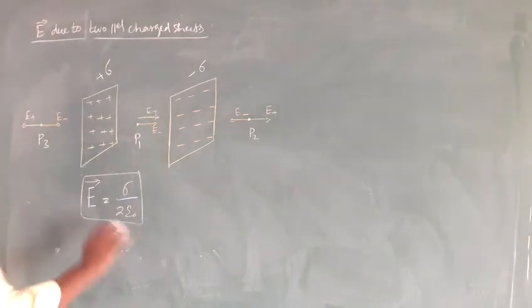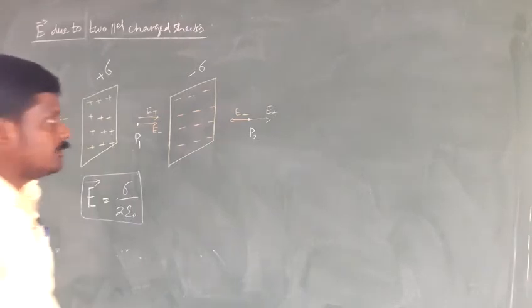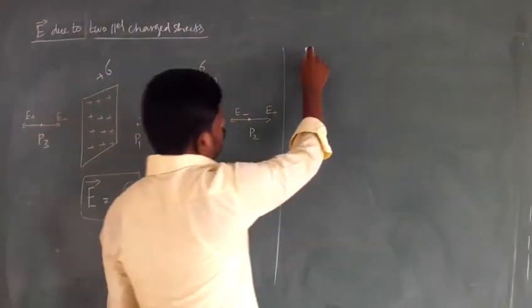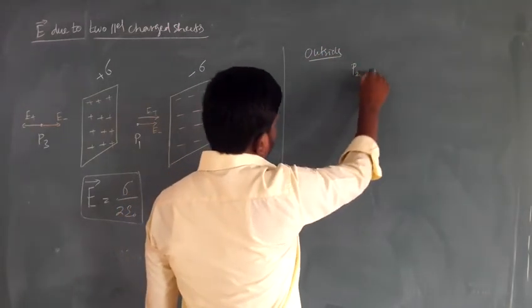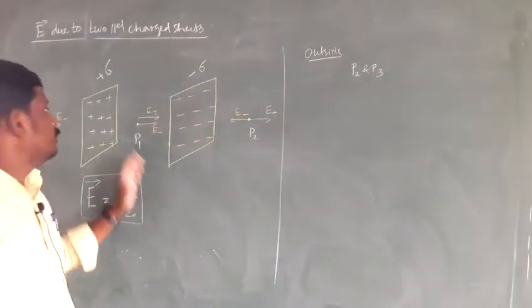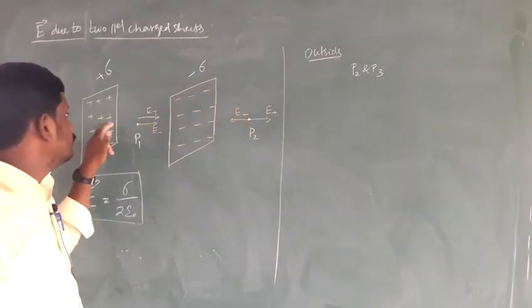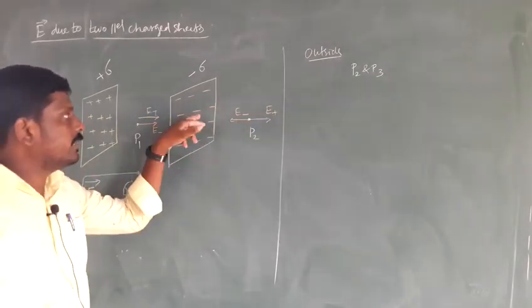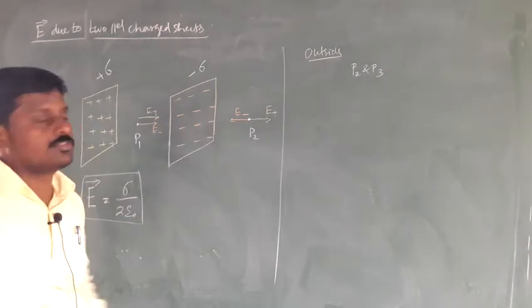So what is the electric field? Outside the plate and inside the plate — we will discuss now. Outside at points P2 and P3: due to the positive charge, the electric field points outwards. At point P2, due to the positive charge, electric field is outwards — that is E plus. Due to the negative charge, the electric field points inwards, so they are in opposite directions.